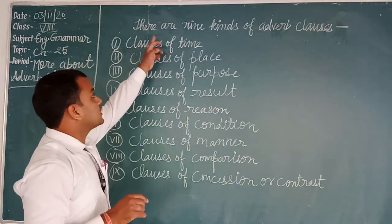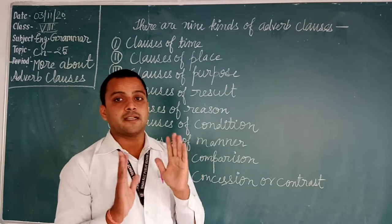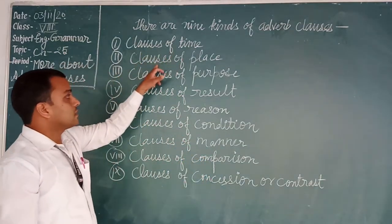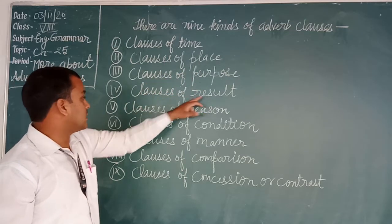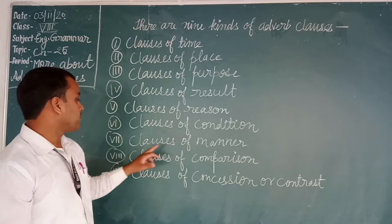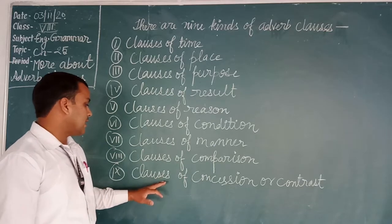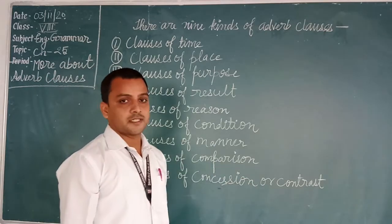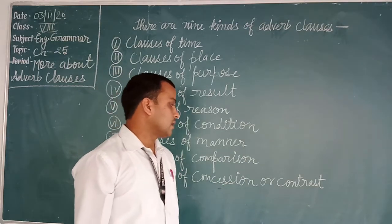There are nine kinds of Adverb clauses: clauses of time, clauses of place, clauses of purpose, clauses of result, clauses of reason, clauses of condition, clauses of manner, clauses of comparison, and clauses of concession or contrast.